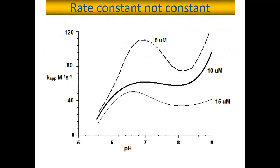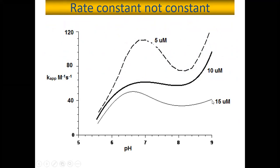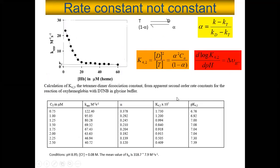Now, with the same hemoglobin, reacting with the same quantity of DTNB reagent — when you react at 5 micromolar hemoglobin you have one profile, at 10 micromolar you have another profile, and at 15 micromolar you have another profile. The expectation is that when you vary concentration, your rate constant ought to be constant. We discovered that our rate constant is not constant. You have a problem — what do you use this problem to solve? So we took varying concentrations of hemoglobin and calculated the apparent rate constant for each.